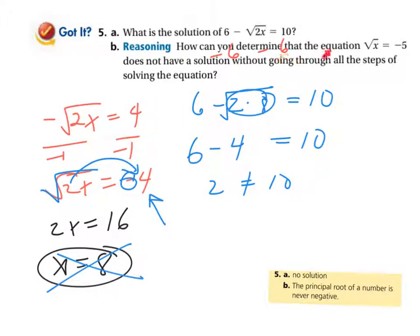How can you determine that the equation square root of x equals negative 5 does not have a solution without going through all the steps? Well, based on that idea mentioned earlier, the principal root of a number cannot be negative. In other words, nothing you can put in here, unless you use the imaginary number i, can come out to be correct. That's the whole point.